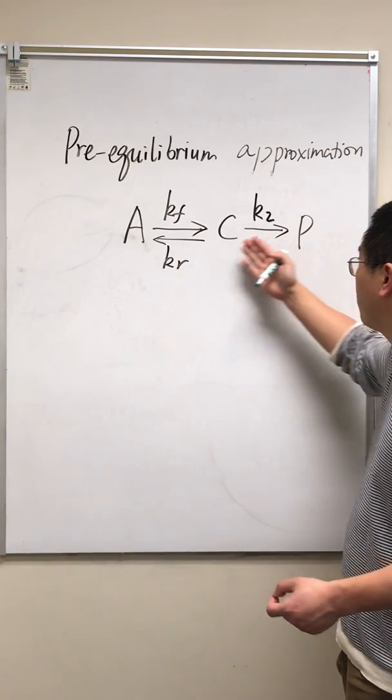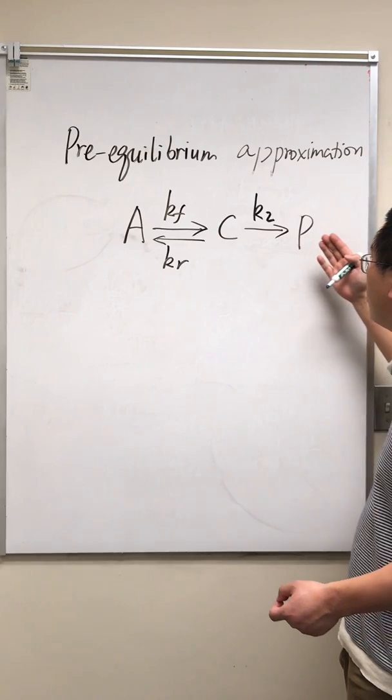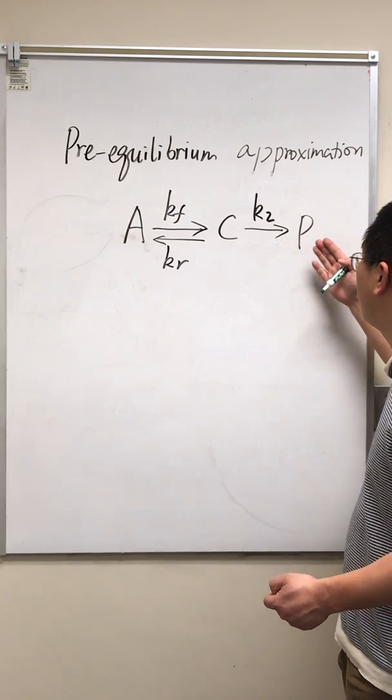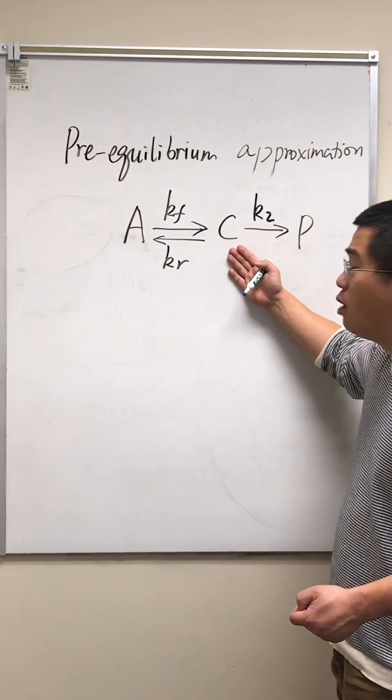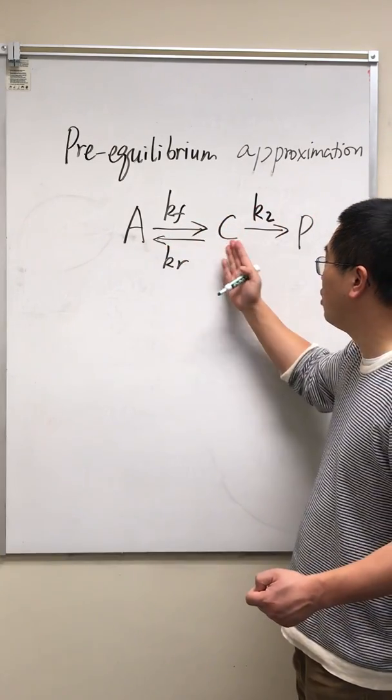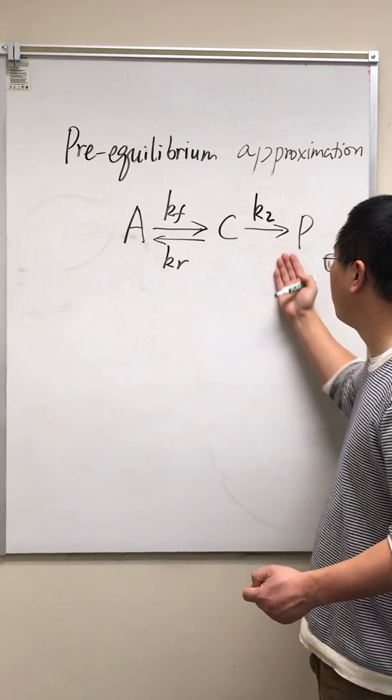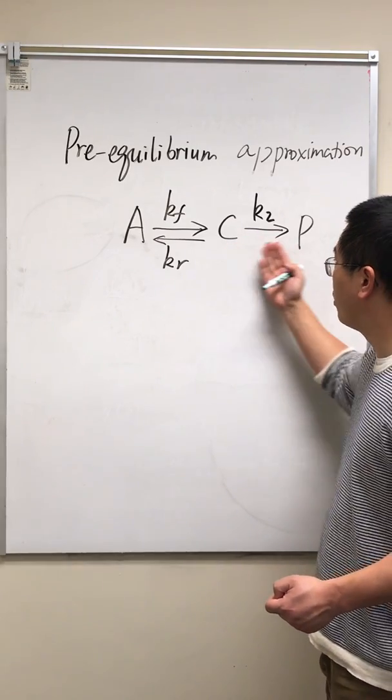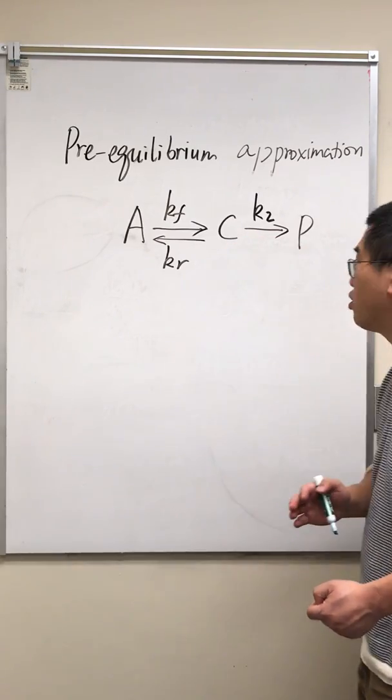It's possible for the reaction to go backward, but let's assume the reaction rate from P to C is much smaller than from C to P or from A to C or from C to A. Basically this backward reaction from P to C is negligible.